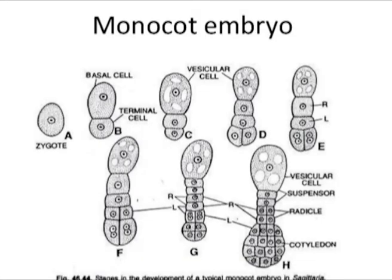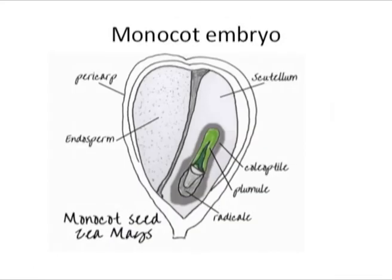In monocots, the zygote divides to form a large basal cell and a small embryonal cell. The basal cell enlarges to form the suspensor without further divisions. The embryonal cell gives rise to the embryo. It divides transversely into two cells, forming a three-celled proembryo consisting of a basal cell, a middle cell, and a terminal cell. By further divisions, the terminal cell forms a single cotyledon, and the middle cell forms the plumule, radicle, and suspensor.